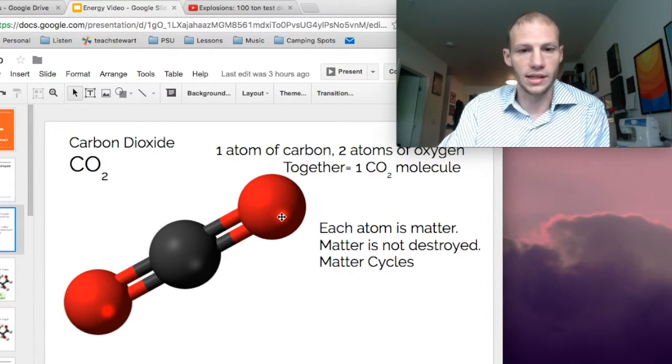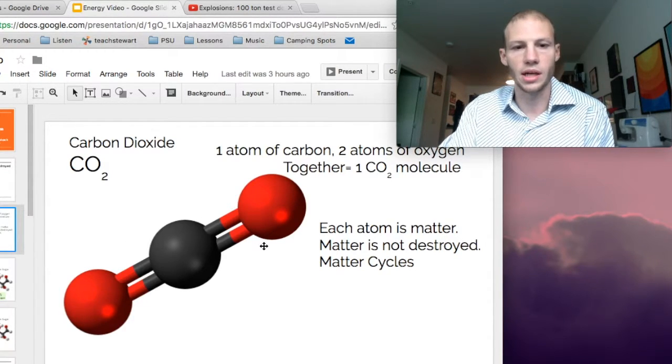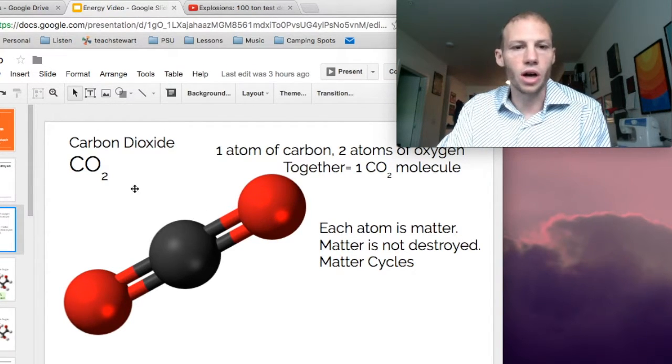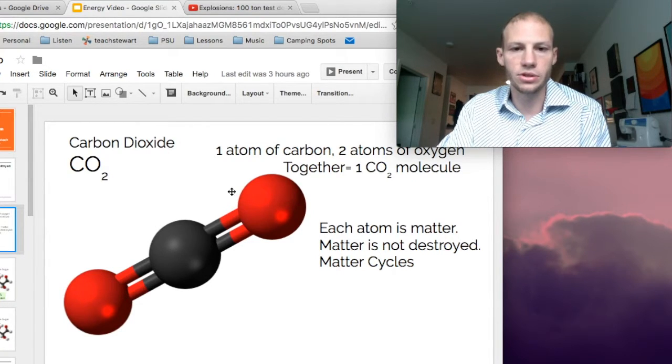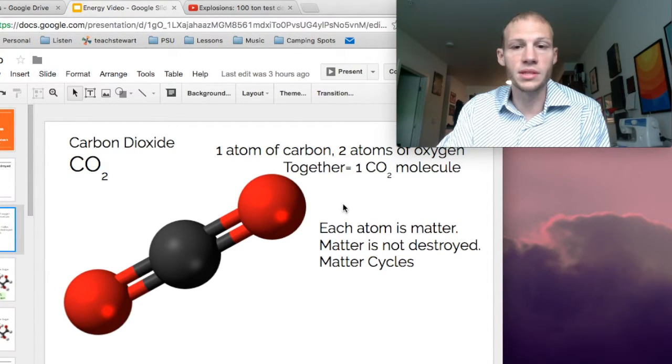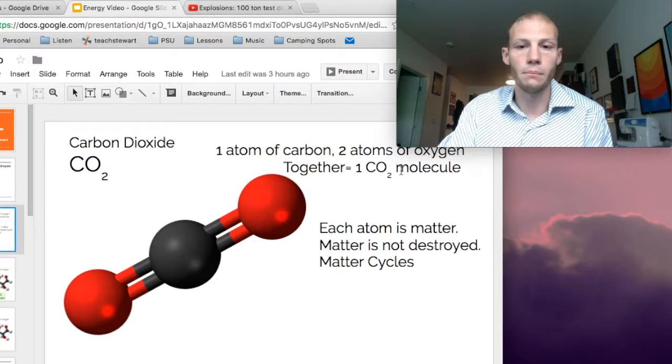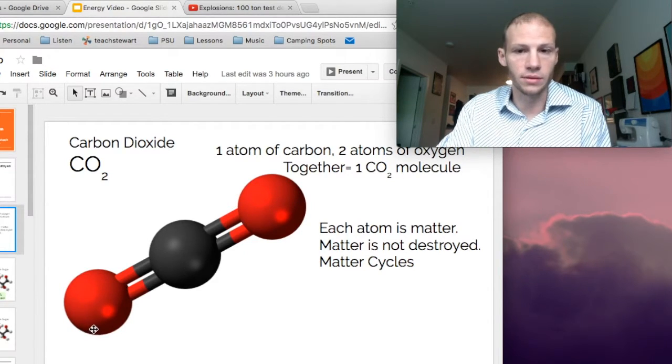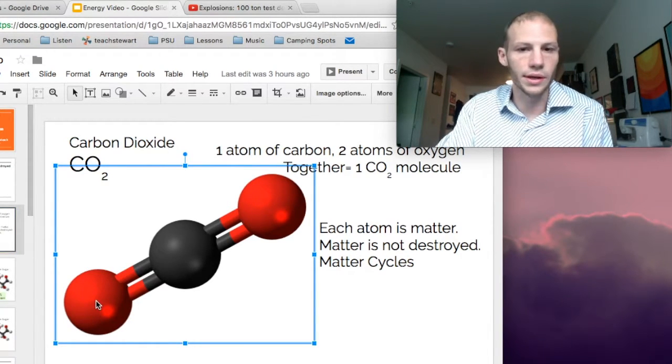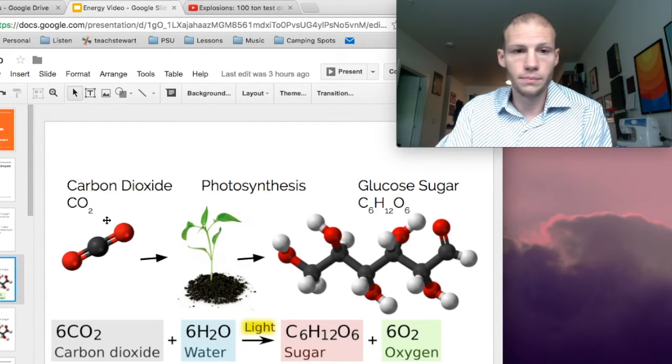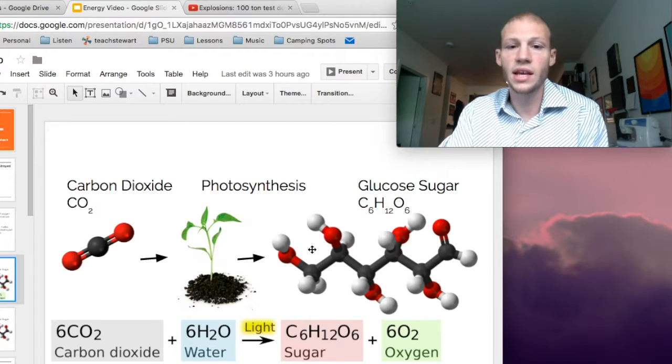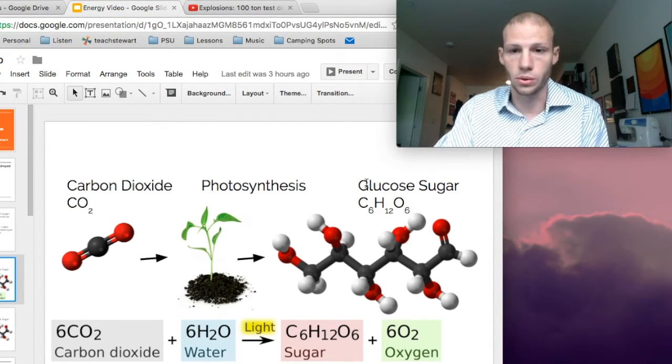So if we focus here, this is carbon dioxide. This is a model of carbon dioxide. Each ball here is an atom. So carbon dioxide is made up of one carbon atom and two oxygen atoms. Together though, all three of these atoms make up one carbon dioxide molecule.